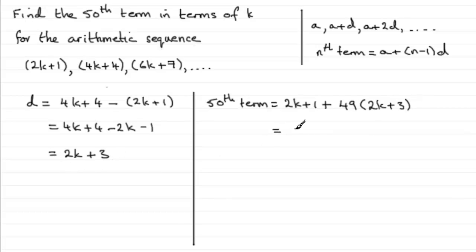So we just need to expand the bracket, so we get 49 times 2k, which is going to be 98k, and then 49 times plus 3, which comes to plus 147. So 2k and 98k gives us 100k, and then the 1 and the 147 is 148. So that's our 50th term expressed in terms of k.